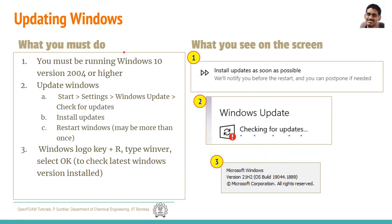Firstly, you need to update your Windows operating system. You need Windows 10 or higher, and even then you might have to apply the latest updates. So go to Windows Start, Settings, Windows Update, and check for updates. In that, you have to click on Install Updates.